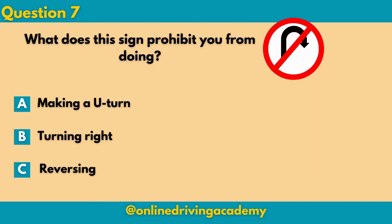Question 7: Again, there is a red line going through. So is it A. making a U-turn, B. turning right, or C. reversing? The correct answer for this will be A: you are not allowed to make a U-turn whenever you see this sign.